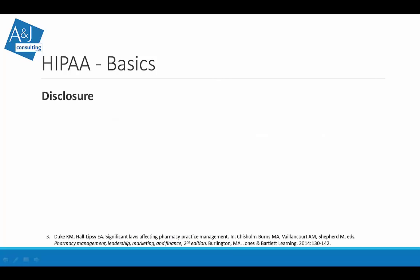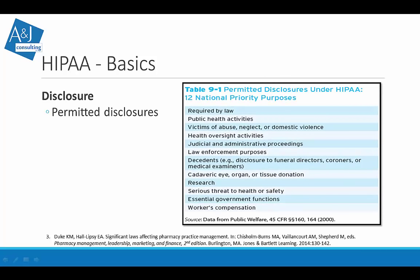There are different kinds of disclosures under HIPAA. A permitted disclosure includes 12 different purposes for which covered entities are allowed to disclose PHI — such as public health activities, suspected abuse or domestic violence, and law enforcement purposes. Law enforcement is one a pharmacy will encounter quite often. For example, if a prescription is suspected of being forged and police show up at the pharmacy, you are not bound by HIPAA to withhold information if the patient is under investigation.